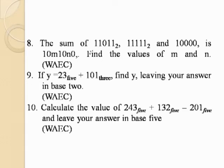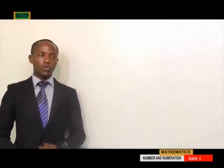Question number 10: Calculate the value of 243 base 5 plus 132 base 5 minus 201 base 5, and leave your answer in base 5. While solving this type of question we have to follow BODMAS because there are two operations involved — that's addition and subtraction — which means addition will come first as step 1, and then subtraction will follow.